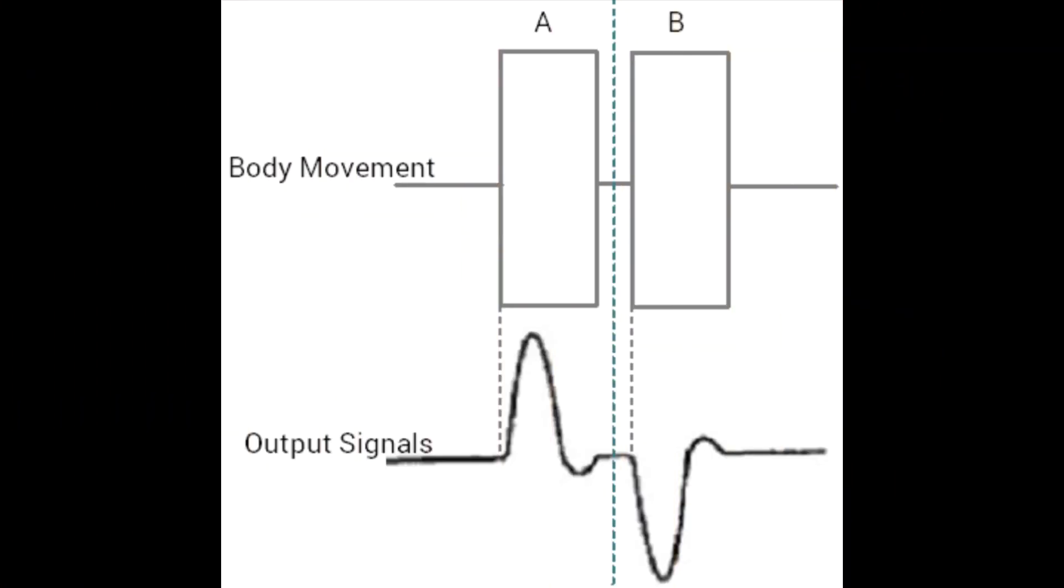In a normal state the signal pin outputs a low signal. When motion is detected however it outputs a high signal on its output pin. By looking for this change from low to high that is how we can tell that motion occurred.